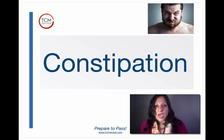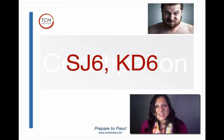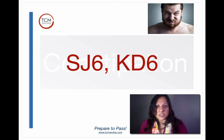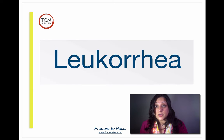Next we have constipation, treated with Sanjiao 6 and Kidney 6. Kidney 6 builds the yin fluids, and Sanjiao 6 moves and regulates fluids. You need to create moisture in the large intestine when there's constipation, so these two points are great for that.